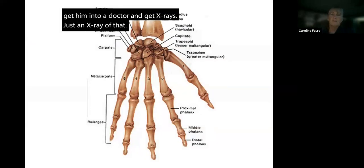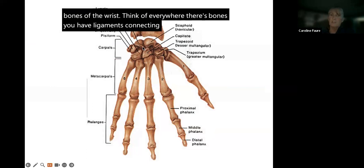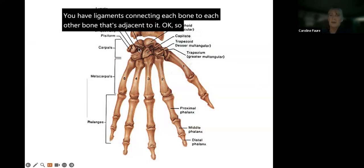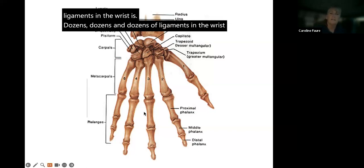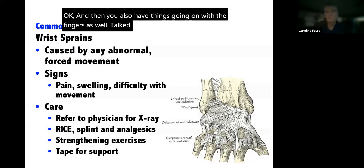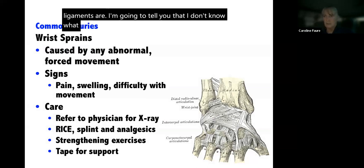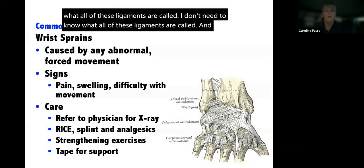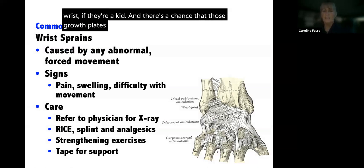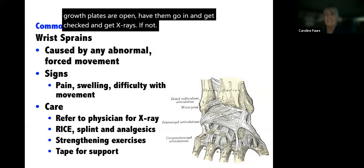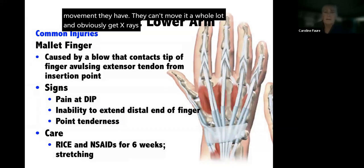The wrist is complex bone-wise — everywhere there are bones, there are ligaments connecting each adjacent bone, meaning dozens and dozens of ligaments in the wrist. You don't need to know all their names. All you need to know is: if they sprain their wrist and they're a kid with possibly open growth plates, have them go in for x-rays. If not, assess pain level and range of motion — if they can't move it much, get x-rays.